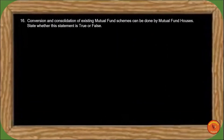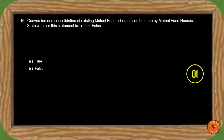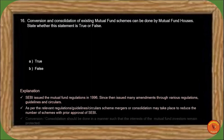Next question: Conversion and consolidation of existing mutual fund schemes can be done by a mutual fund house — state whether this statement is true or false. Since SEBI issued mutual fund regulations in 1996, various amendments have been made. As per relevant regulations and guidelines, schemes can be merged and consolidated to reduce the number of schemes, but SEBI's prior approval is required. Consolidation and conversion should be done such that investors' interests remain protected. So the correct answer is option A, true.